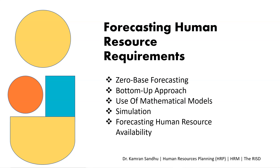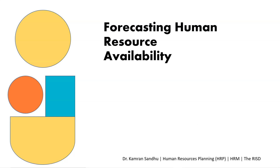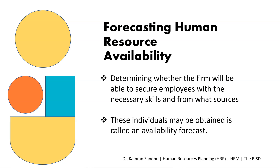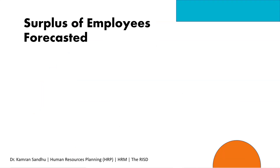Forecasting human resource availability determines whether the firm will be able to secure employees with the necessary skills and from what sources — this is called an availability forecast. When a comparison of requirements and availability indicates a worker surplus, it will result in restricting hiring, reduced hours, early retirements, and layoffs.